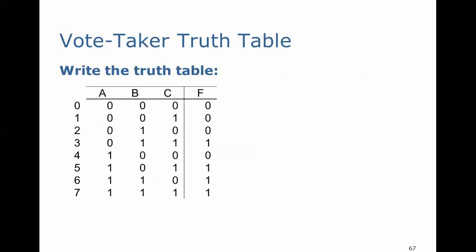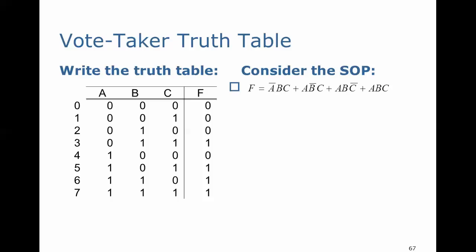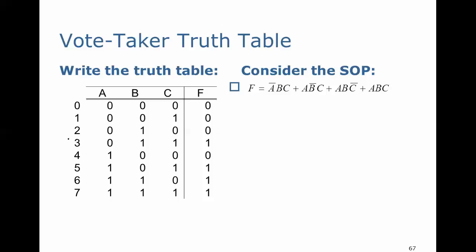So let's write the truth table. We see that we have four entries when any two inputs are true and when all three are true. Looking at the sum of product terms — remember when you do sum of products, you are summing minterms — the minterms represent the ones in the truth table. We have four ones, at M3, M5, M6, and M7.